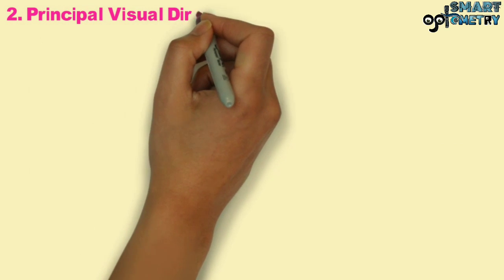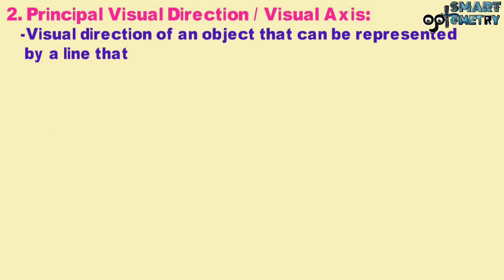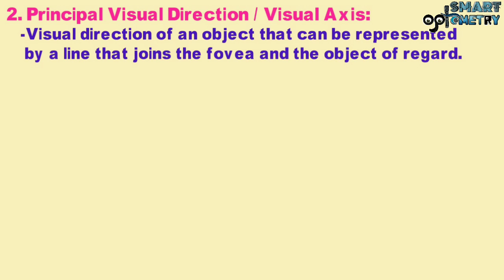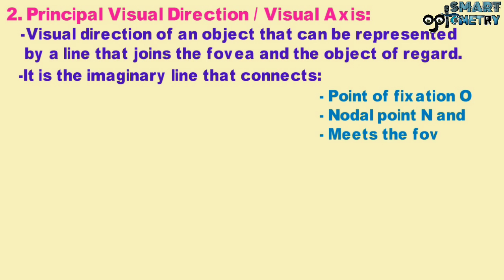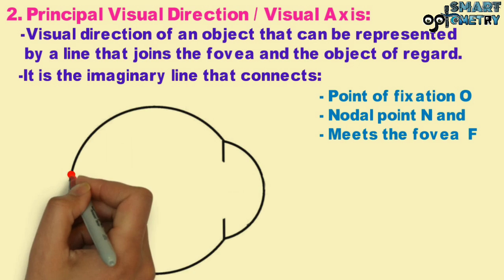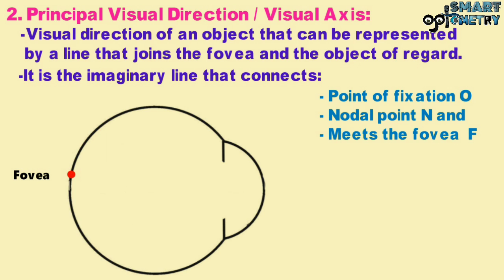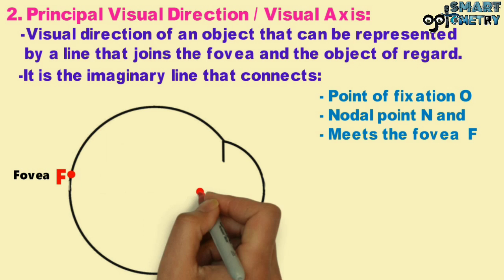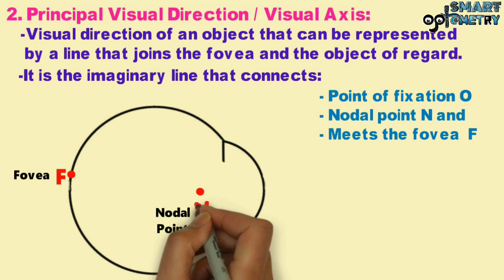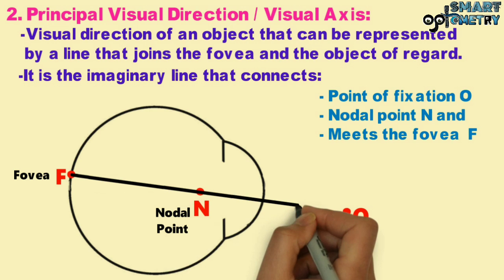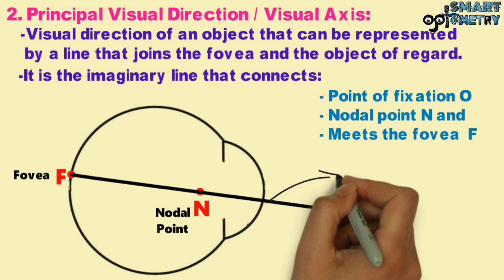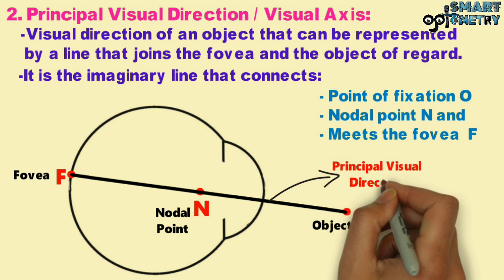Second, principal visual direction, or visual axis, is the visual direction of an object represented by a line that joins the fovea and the object of regard. It is the imaginary line that connects the point of fixation O, passing through the nodal point N, and meets the fovea at point F. In the diagram, the fovea is represented by point F, the nodal point by N, and the object of regard by O. The line of sight joining the fovea and the object of regard while passing through the nodal point is the principal visual direction.